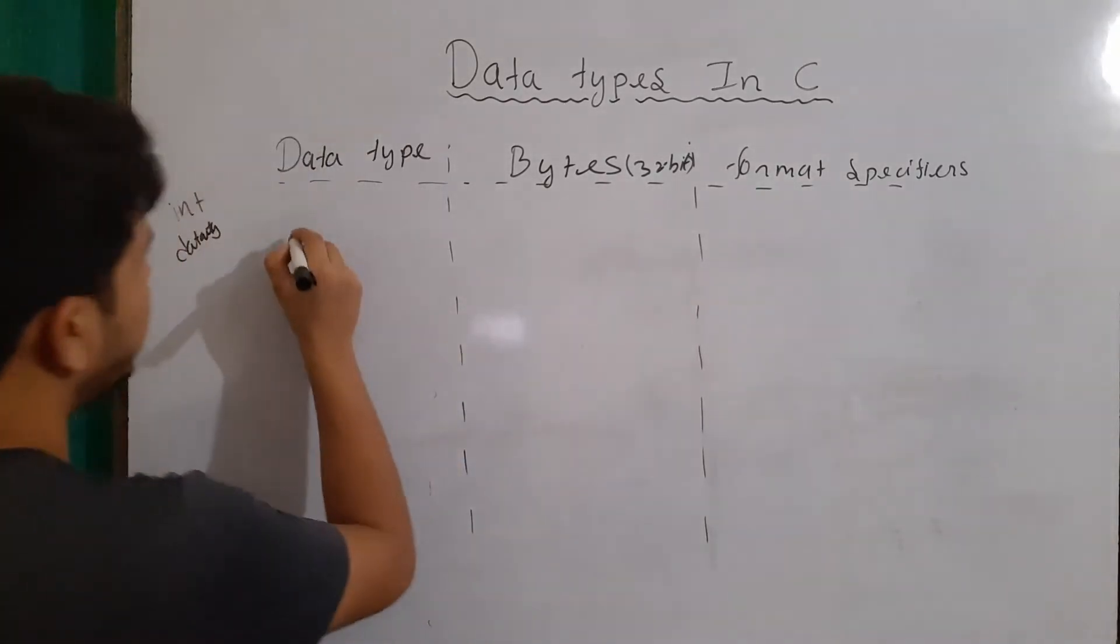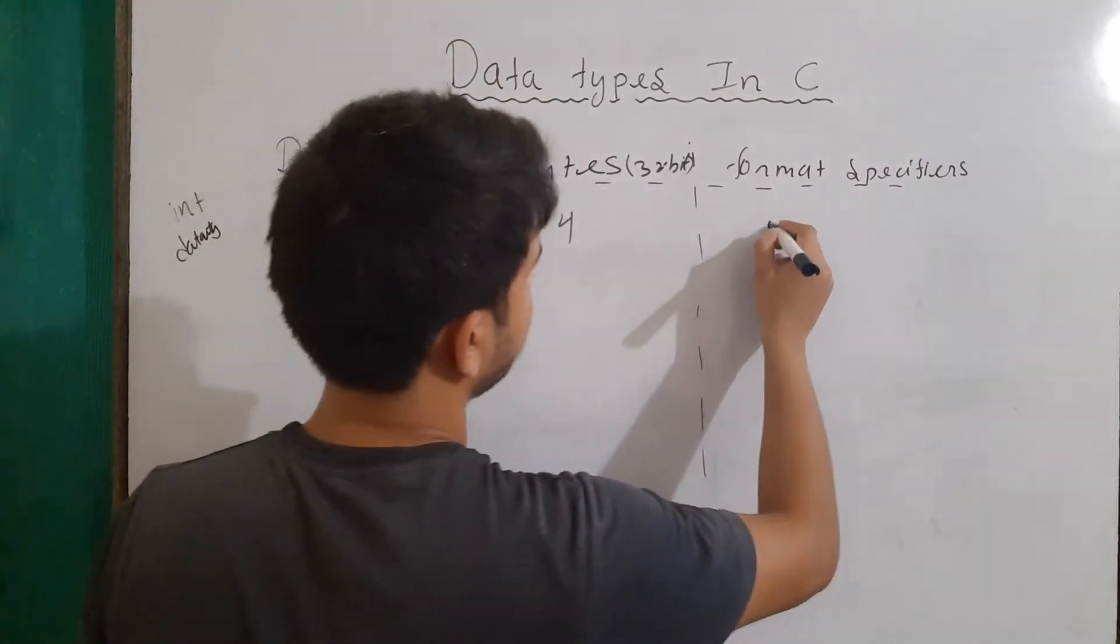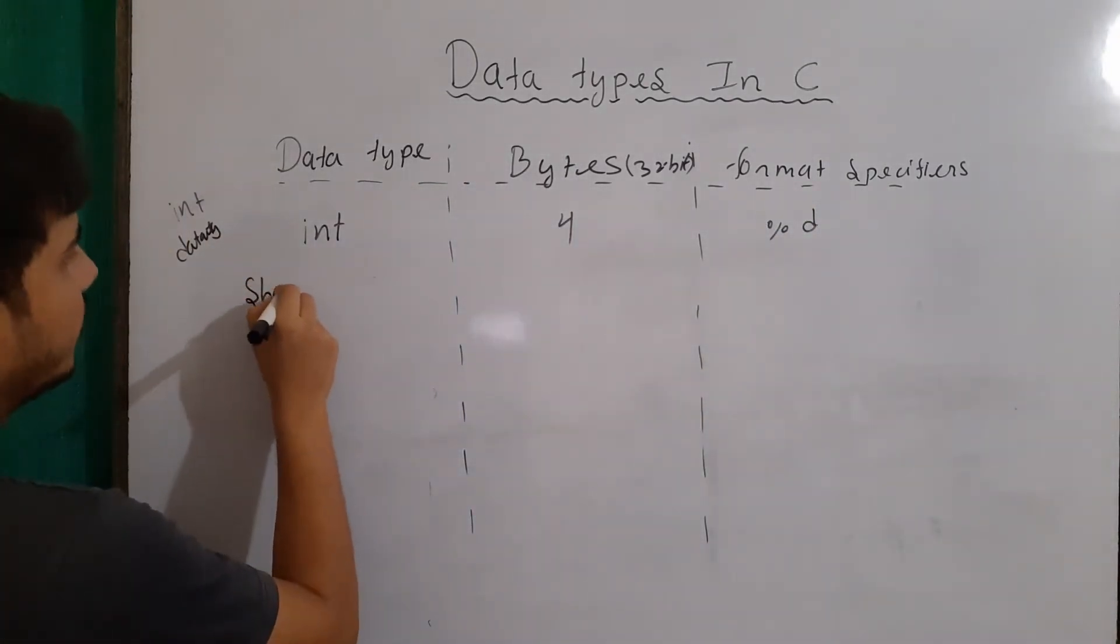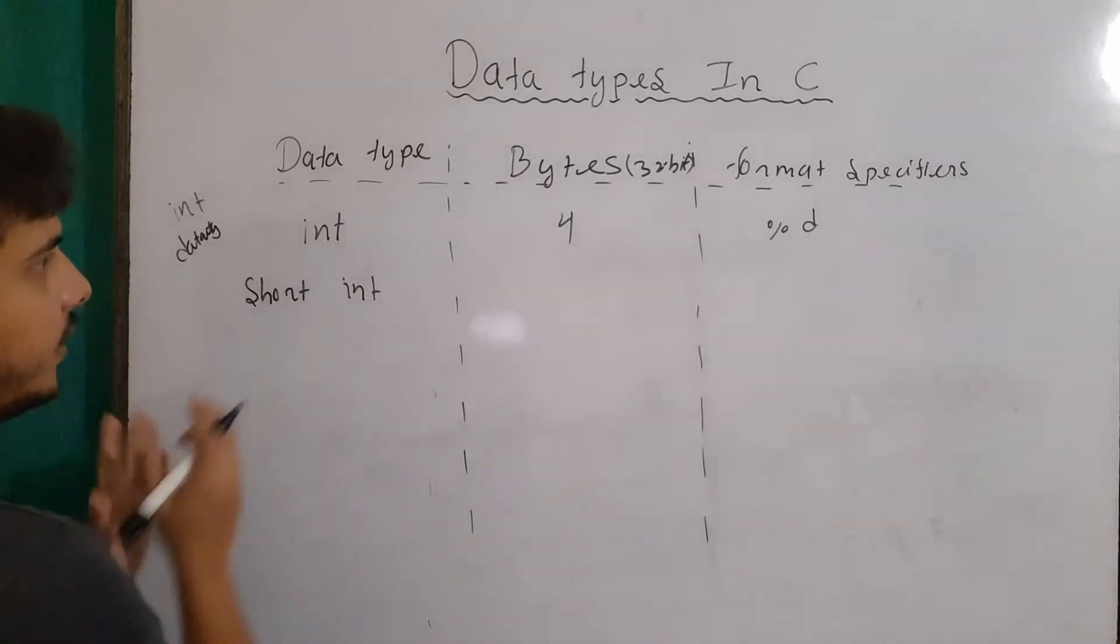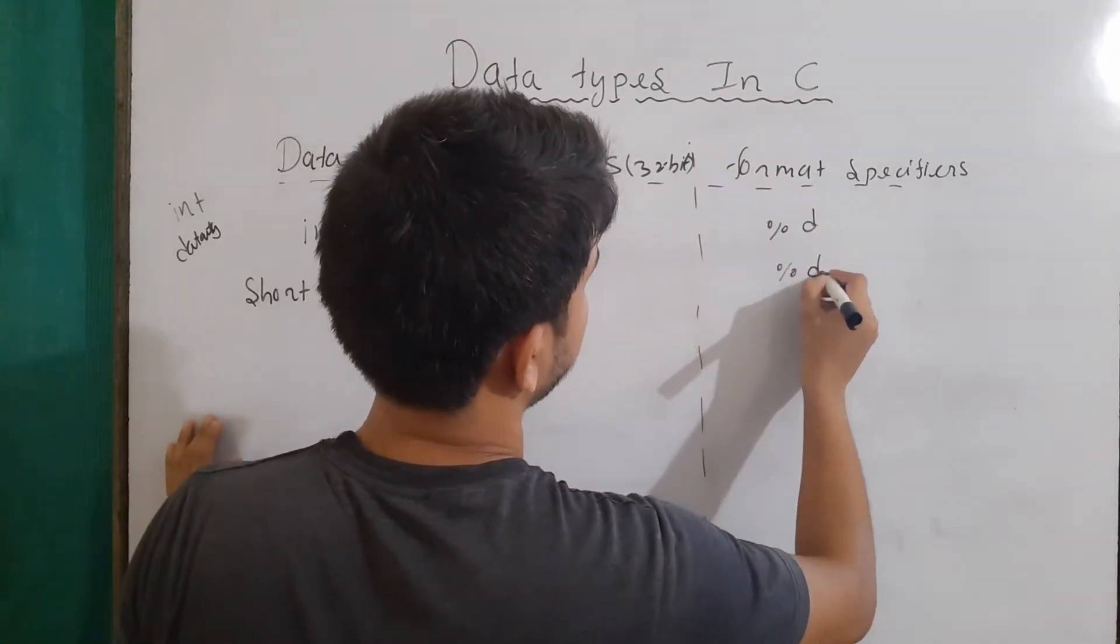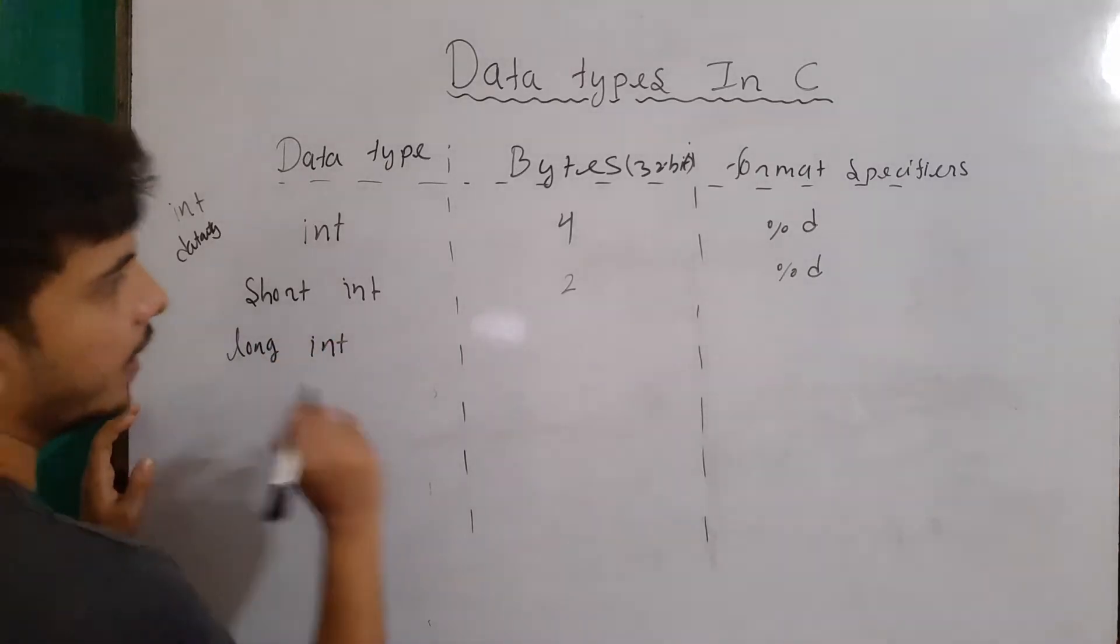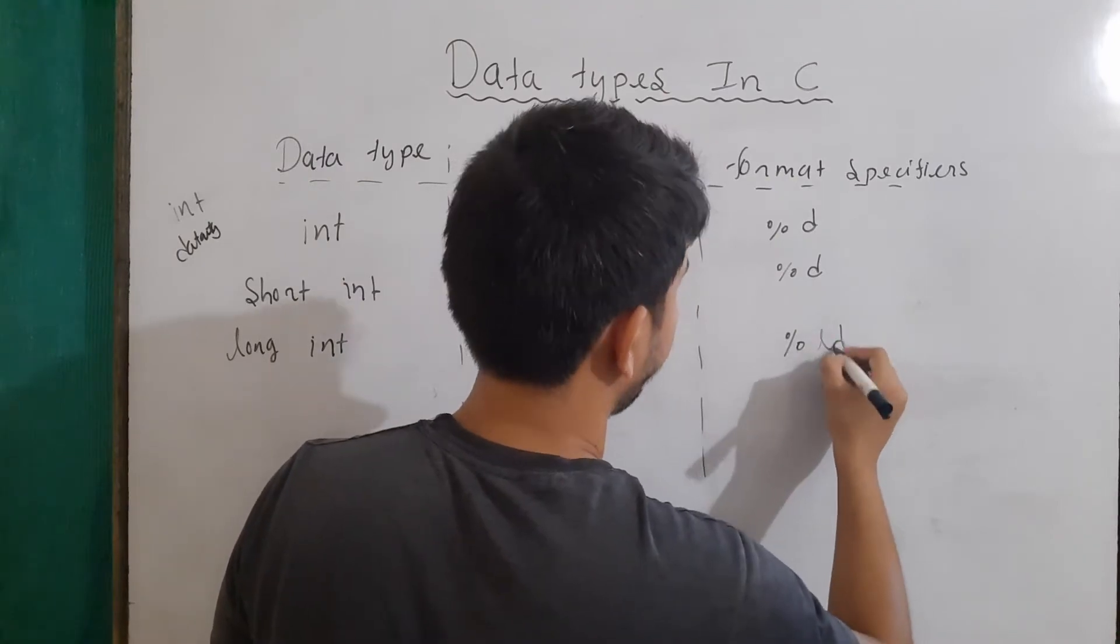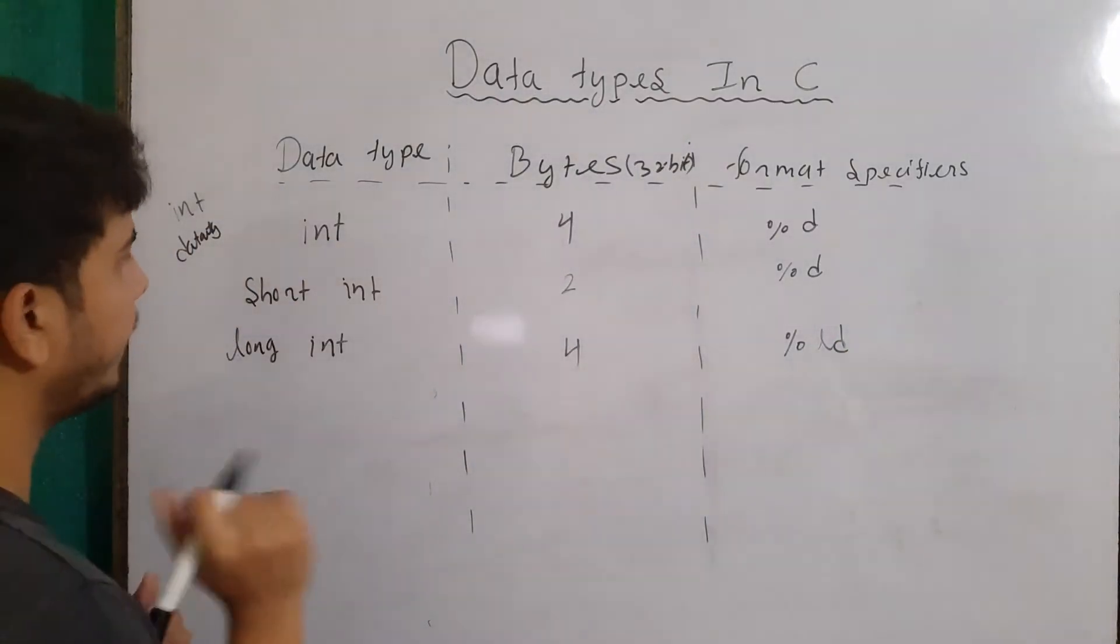Then we have integer data types. I will write here int. The bytes will be 4 and format specifier will be %d. Then there is short int, basically for decreasing the size or range of our integer. That will use 2 bytes and this will also have the format specifier as %d. Then we have long int to increase the range, and this will also use 4 bytes and the format specifier will be %ld. Now, the integer could also be unsigned and signed.